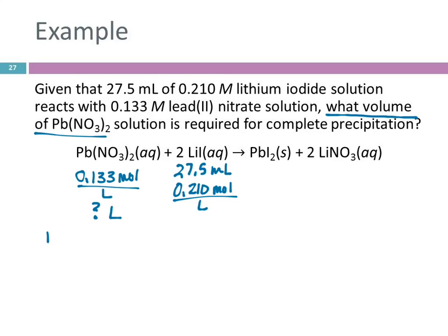So, our path, we're starting out here with milliliters of LiI. And we want to find liters of Pb(NO3)2. What do we have to do in the middle? Moles and moles. So, we're going to go from milliliters of lithium iodide to moles of lithium iodide to moles of lead nitrate.